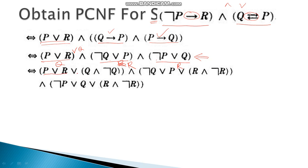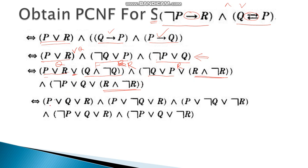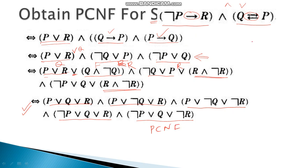After expanding and distributing, we get the max terms: (P OR Q OR R), (P OR NOT Q OR R), (P OR NOT Q OR NOT R), (NOT P OR NOT Q OR R), and (NOT P OR Q OR R). Since there are no common terms to eliminate, this conjunction of five max terms is the Principal Conjunctive Normal Form for the given formula S.